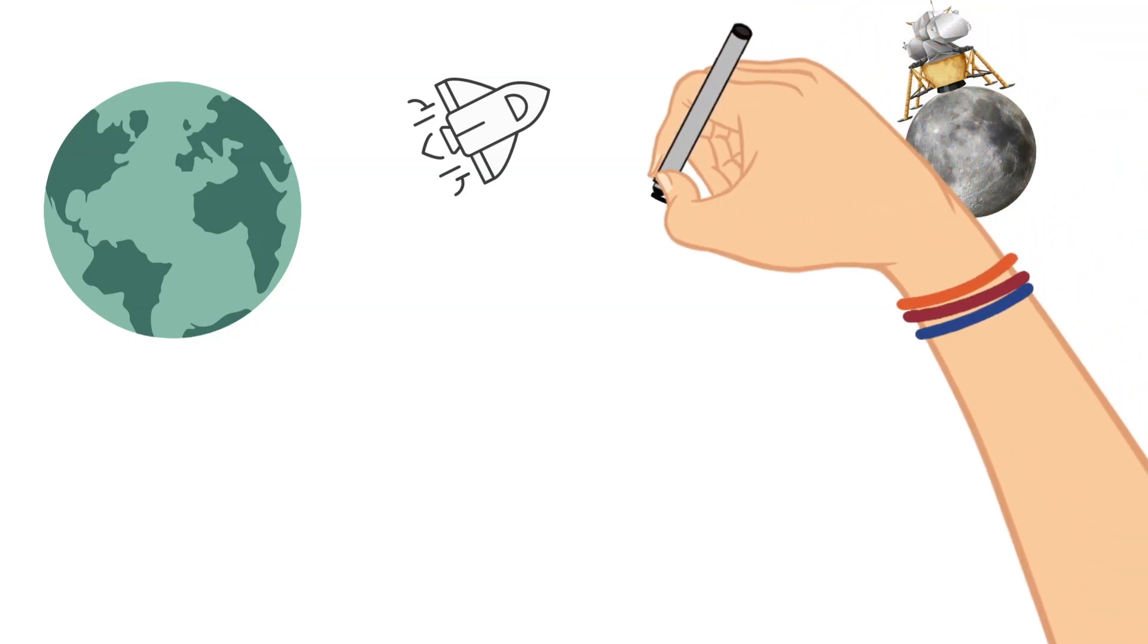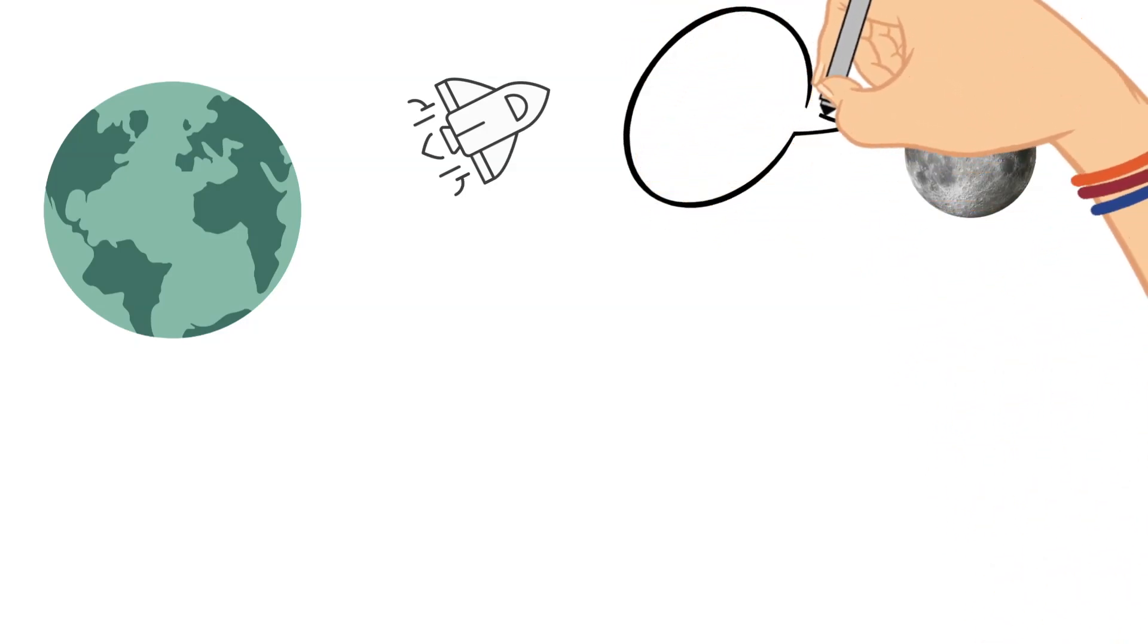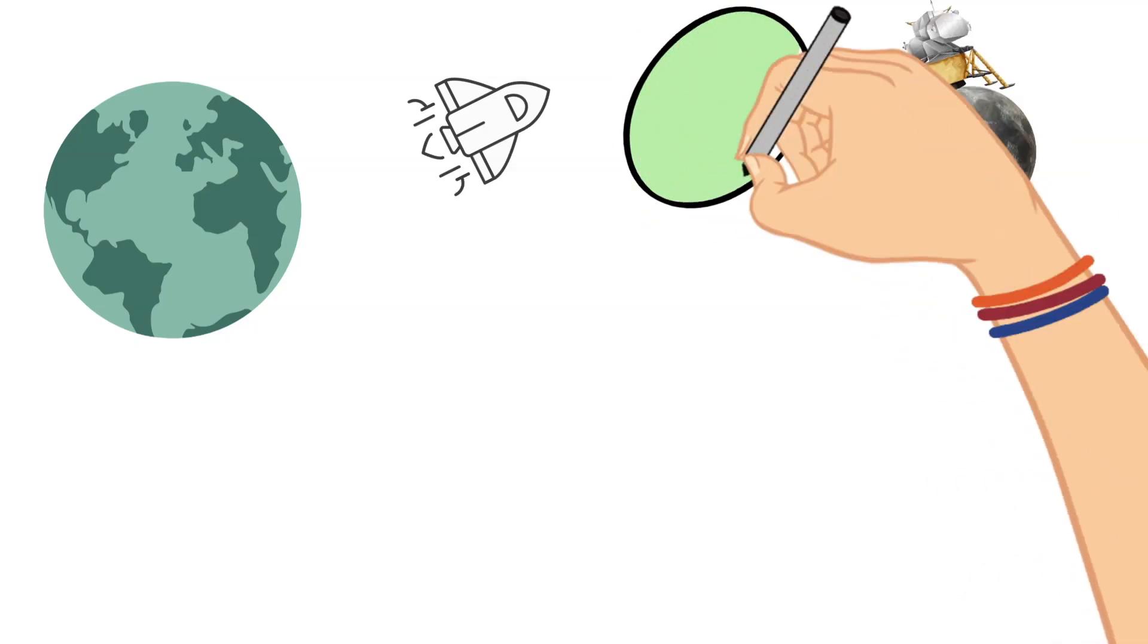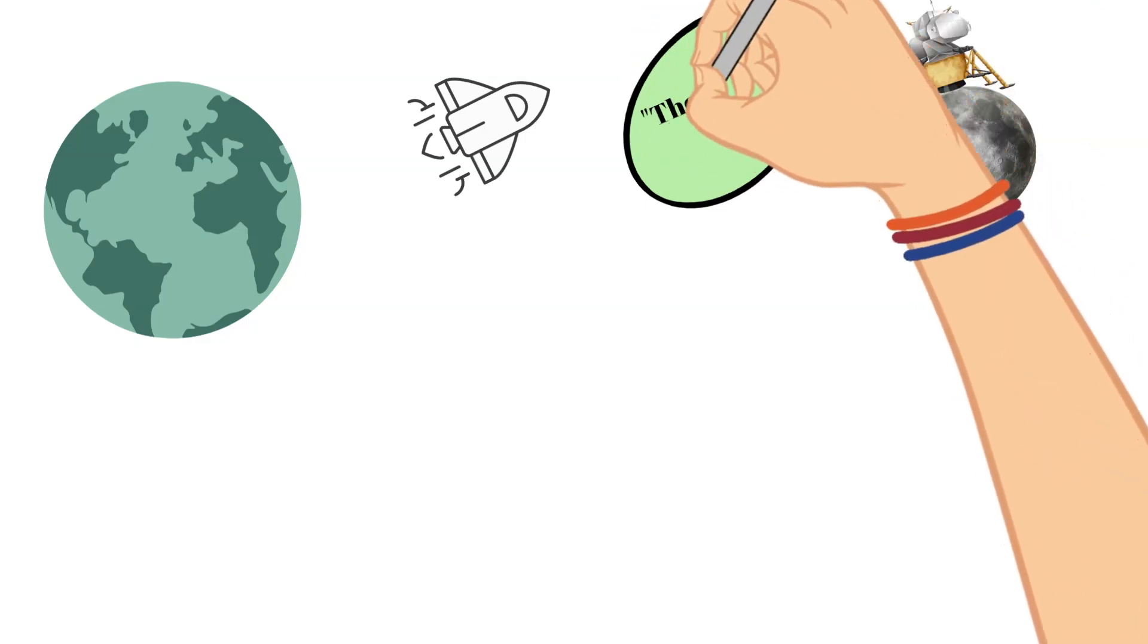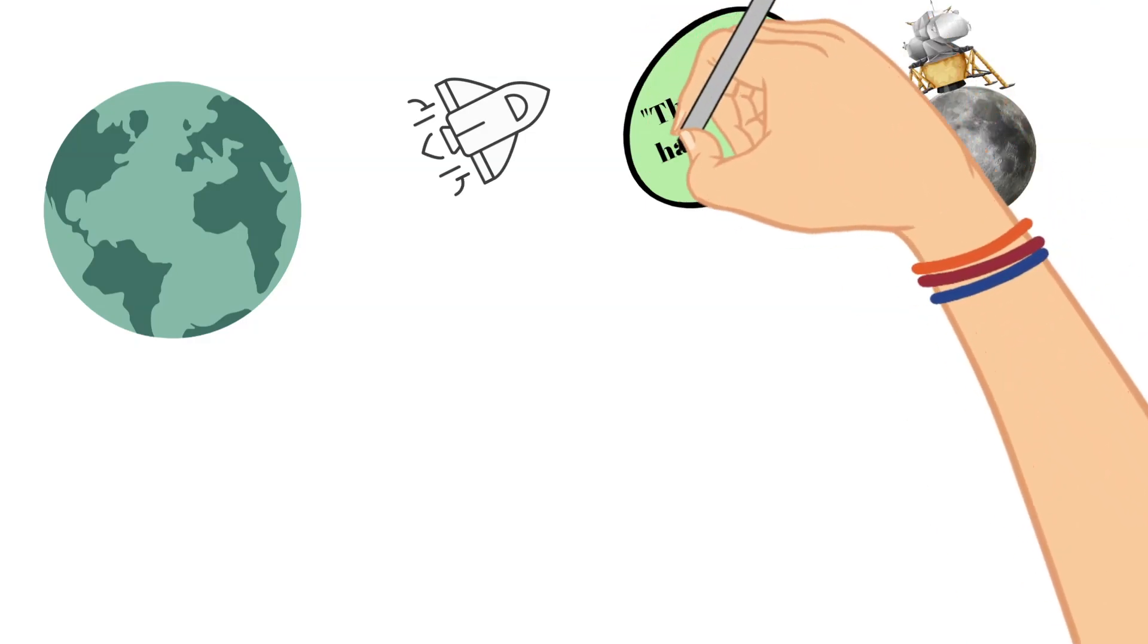The name of this lunar module was the Eagle. And as soon as it touched down, Armstrong radioed back to mission control and said, 'the Eagle has landed.'